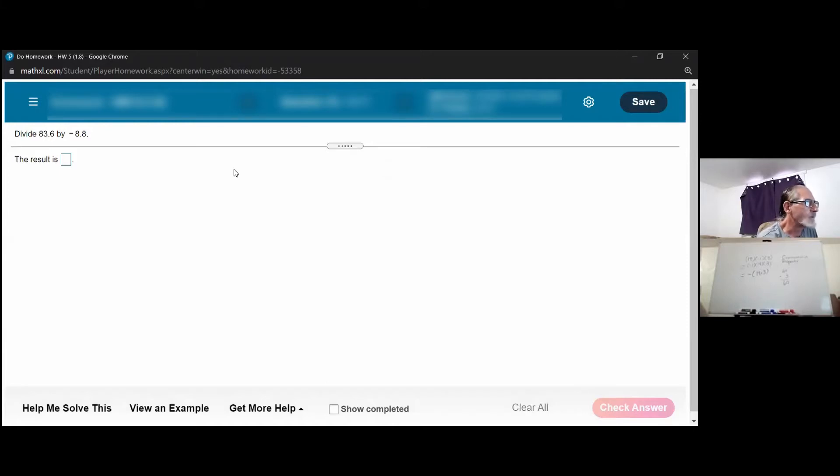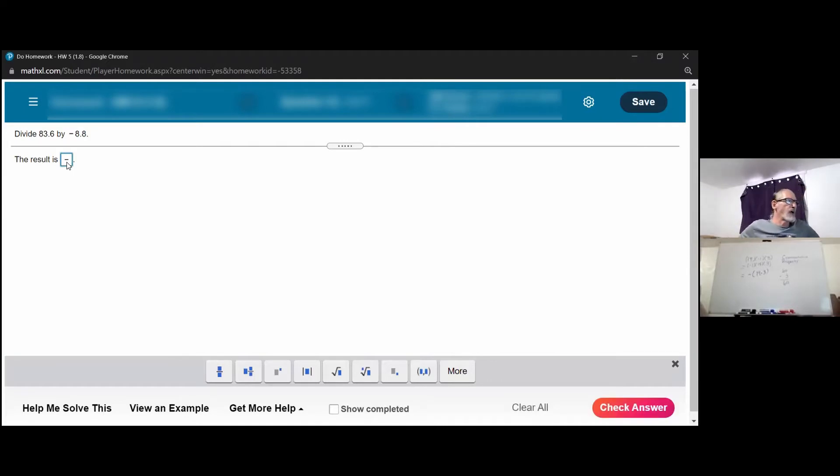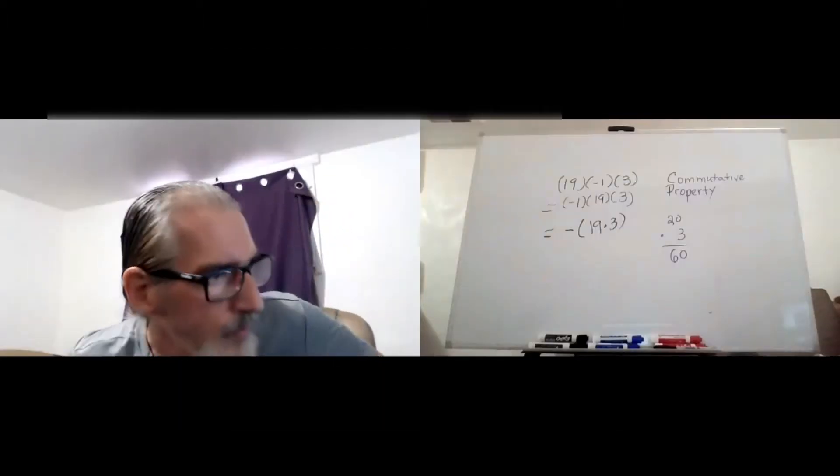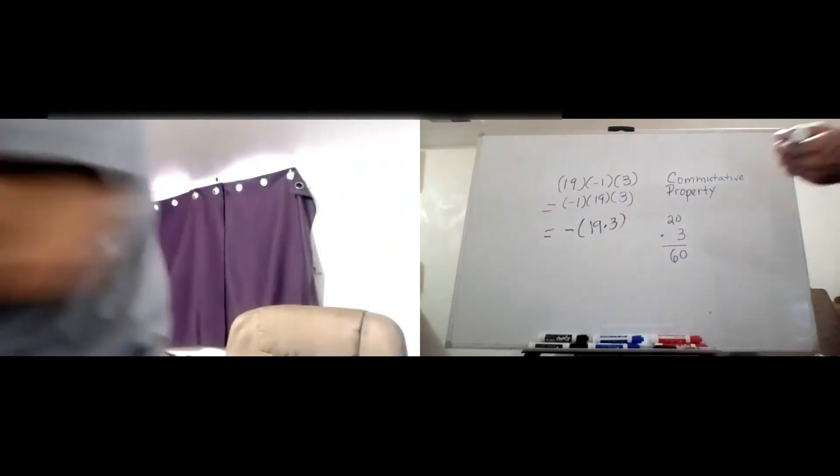Okay, we've got to divide 83.6 by negative 8.8. Only one of them is negative, so we're looking for a negative answer. Now let's take a look at the 83.6 divided by 8.8 part of this.